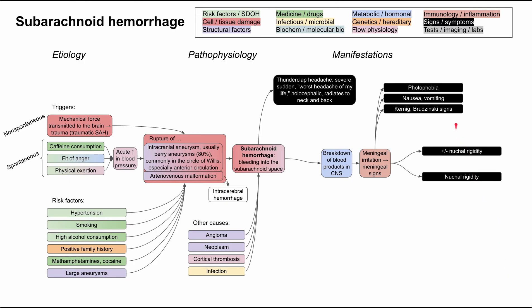Other meningeal signs include photophobia, nausea, and vomiting, as well as physical exam signs — the Kernig and Brudzinski signs. These are associated with stretching the meninges. For instance, if a patient is supine and you extend the hip while bending the knee, that may cause neck pain. Or if you flex the neck while the patient is supine, they may reflexively extend the knee to relax the meningeal space. It's worth looking up pictures or videos of these signs.